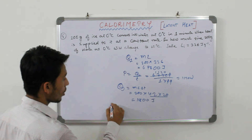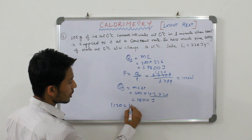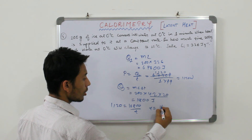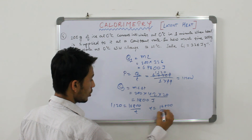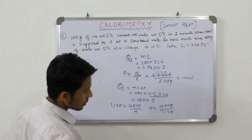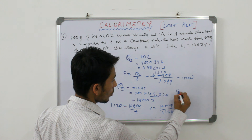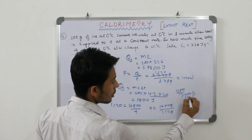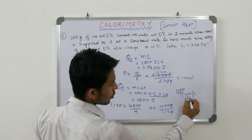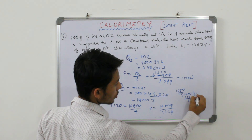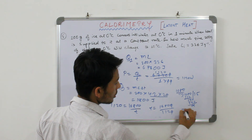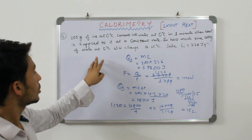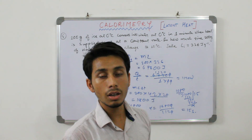Power is 1120 watt and Q = 16800 joule, so T = Q / Power = 16800 / 1120 = 15 seconds. So 15 seconds will be required for the water to change from 0 degrees centigrade to 20 degrees centigrade.